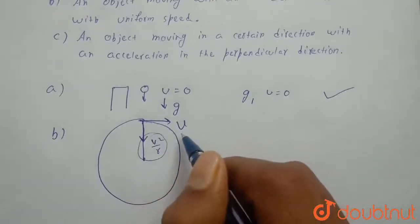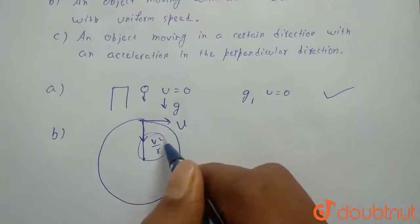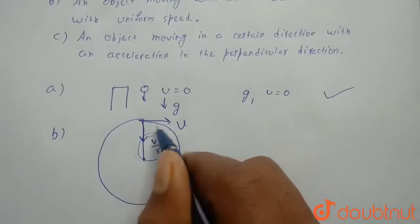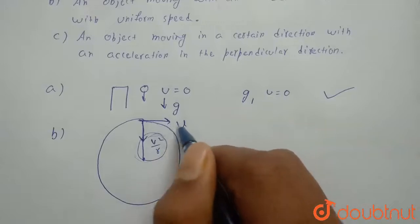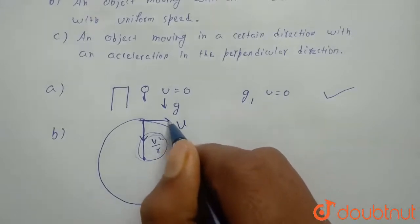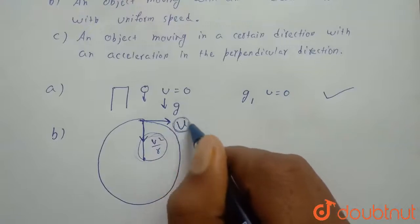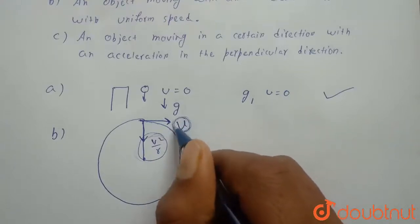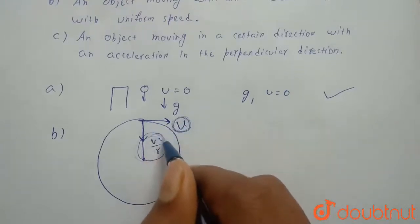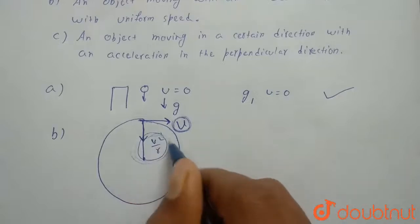So if it has AC, that is acceleration, then we can say that this particle has uniform speed.